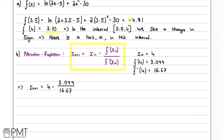Putting these numbers into the calculator gives 3.81409... Rounding to three significant figures, xₙ₊₁ = 3.81.